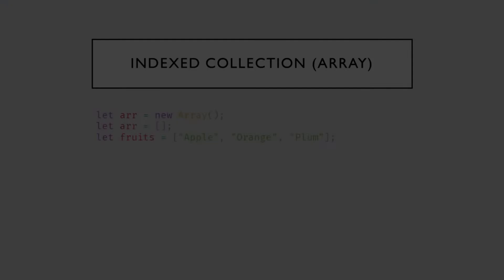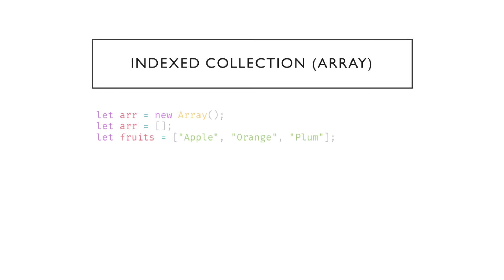Objects allow you to store keyed collections of values, but quite often we need an ordered collection where we have a first, second, third element and so on. For example, to store a list of users, goods, or HTML elements. It's not convenient to use an object here because it provides no methods to manage element order. There also exists a special data structure named array to store ordered collections, but remember it's still an object under the hood. There are two syntaxes for creating an empty array: the constructor way or the bracket notation — the bracket notation is preferred.